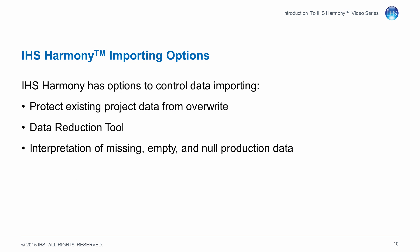Harmony has global options that relate to importing data. These options are used to protect existing project data from overwrite, enable the Importing Data Reduction tool, and set the rules for how Harmony will interpret missing, empty, and null production data.